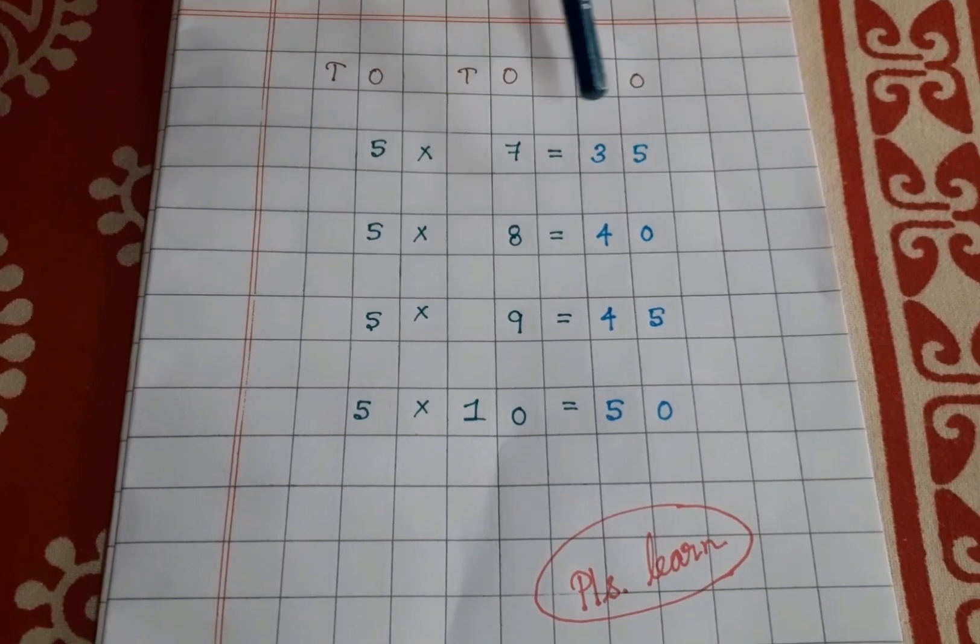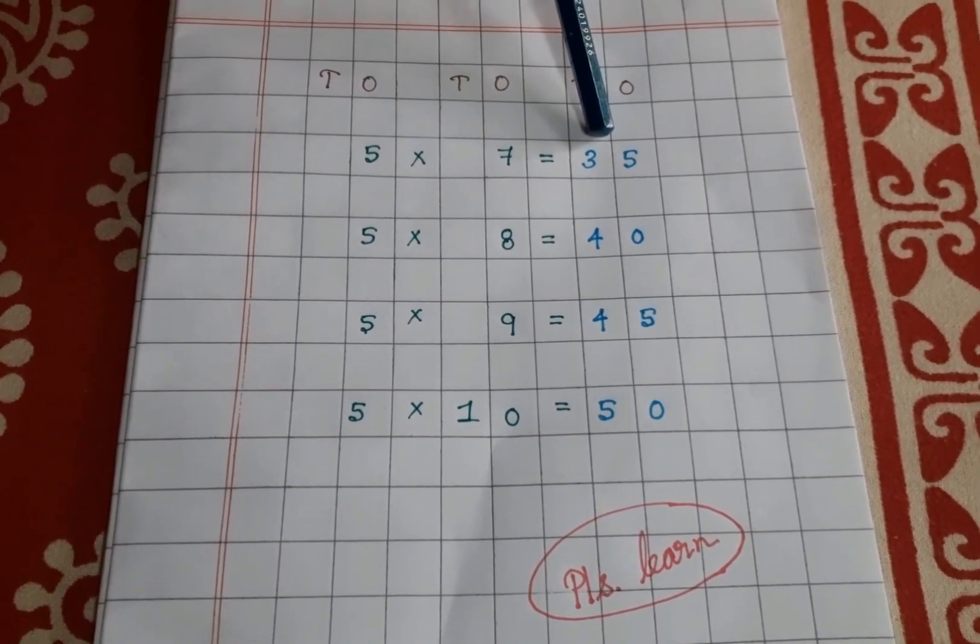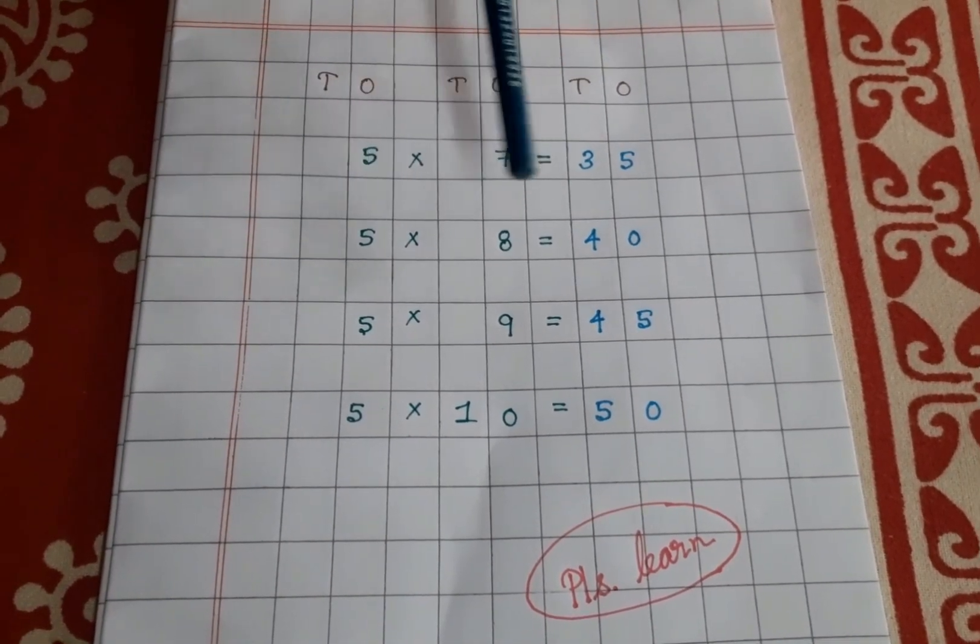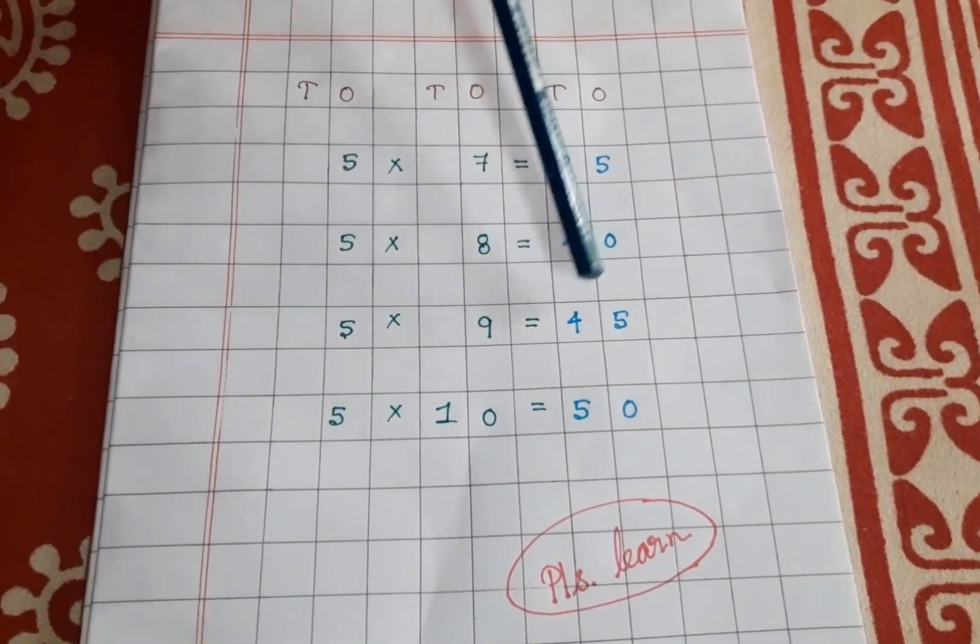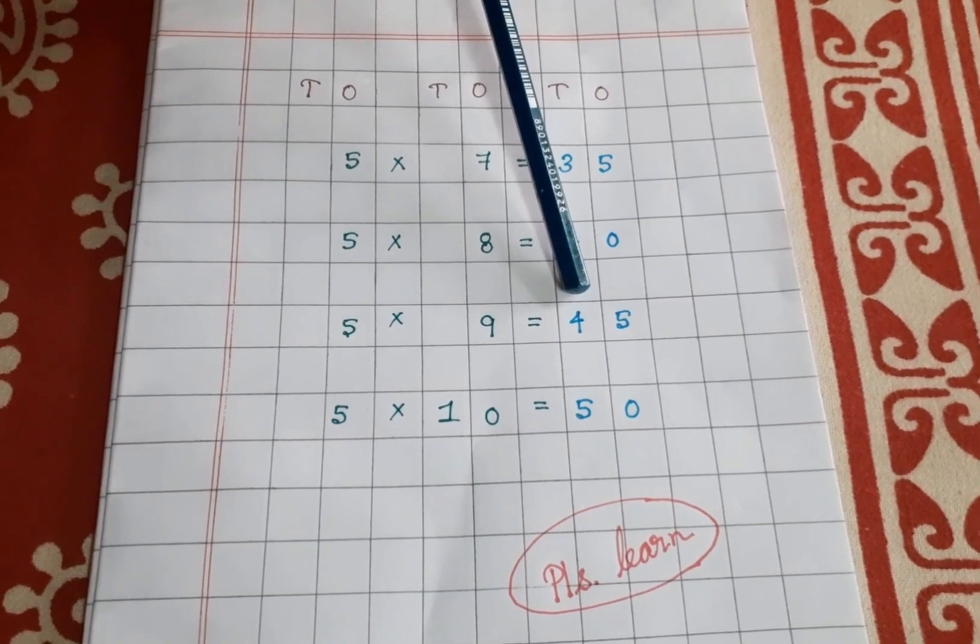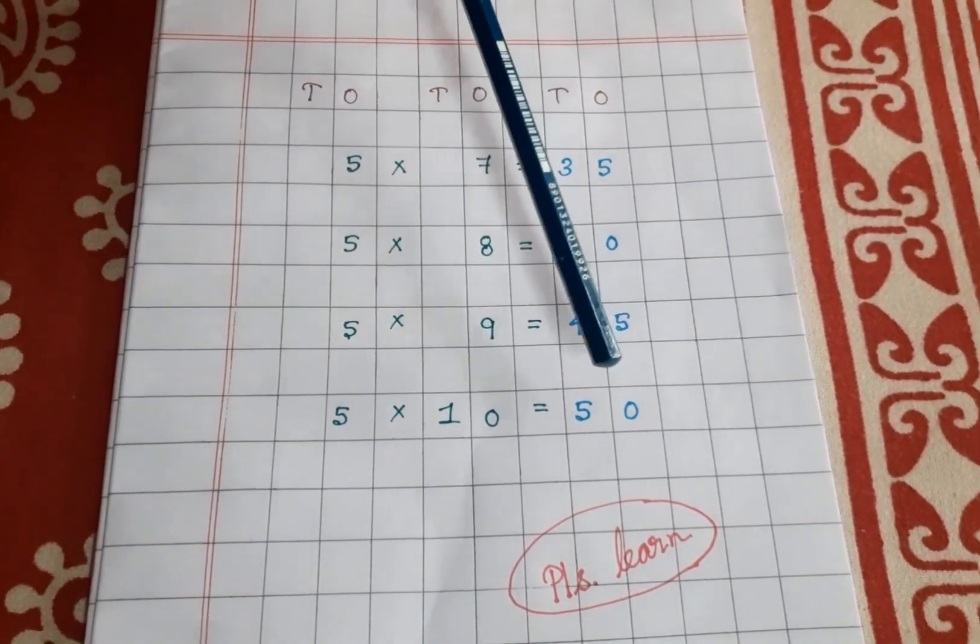5 sevens are 35. 5 eights are 40. 5 nines are 45. 5 tens are 50.